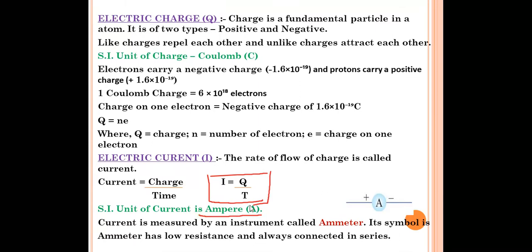The instrument used for measuring current is the Ammeter. Its symbol is a circle with capital A inside, with positive and negative terminals. A meter is always connected in series in a circuit — not in parallel.